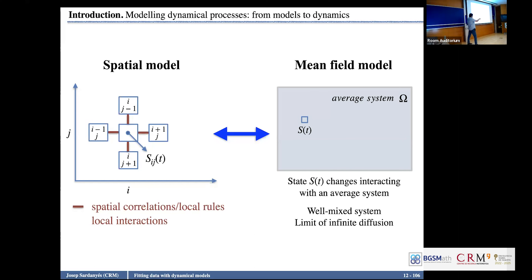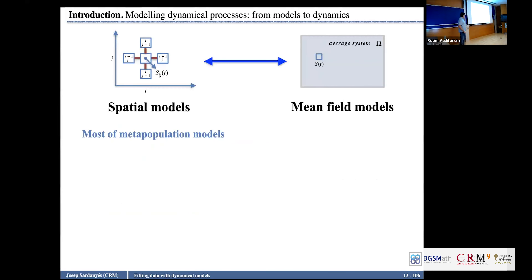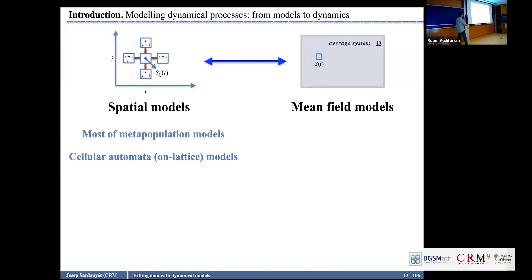Spatial models — I will give a list of different models. Most of the metapopulation models, because the classic metapopulation model is a mean-field model — we can consider space implicitly. Then we have cellular automata and lattice models: a grid of cells, discrete variables, neighbors, and the time evolution depends on some neighborhood, so spatial correlations matter. Then we have coupled map lattices, which have been mainly used to study spatiotemporal chaos.